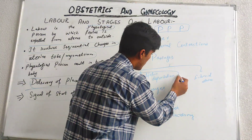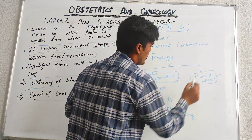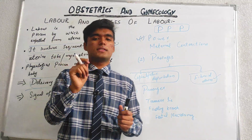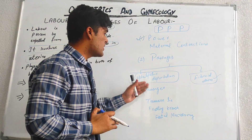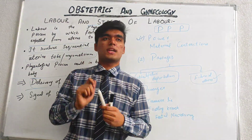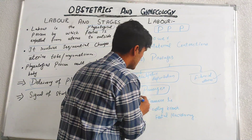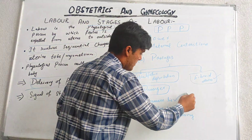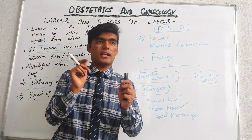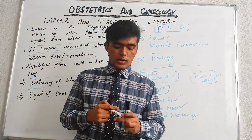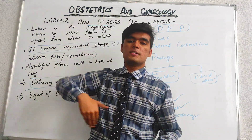In the Passage, we have cephalopelvic disproportion and fibroid uterus. In the case of fibroid uterus, there is no chance of normal delivery. In cephalopelvic disproportion, there is basically a distortion in the shape of the pelvis. The third P is Passenger, which refers to the baby — whether it is in transverse lie, footling breech, or whether fetal macrosomia is present. We should examine the position of the baby.